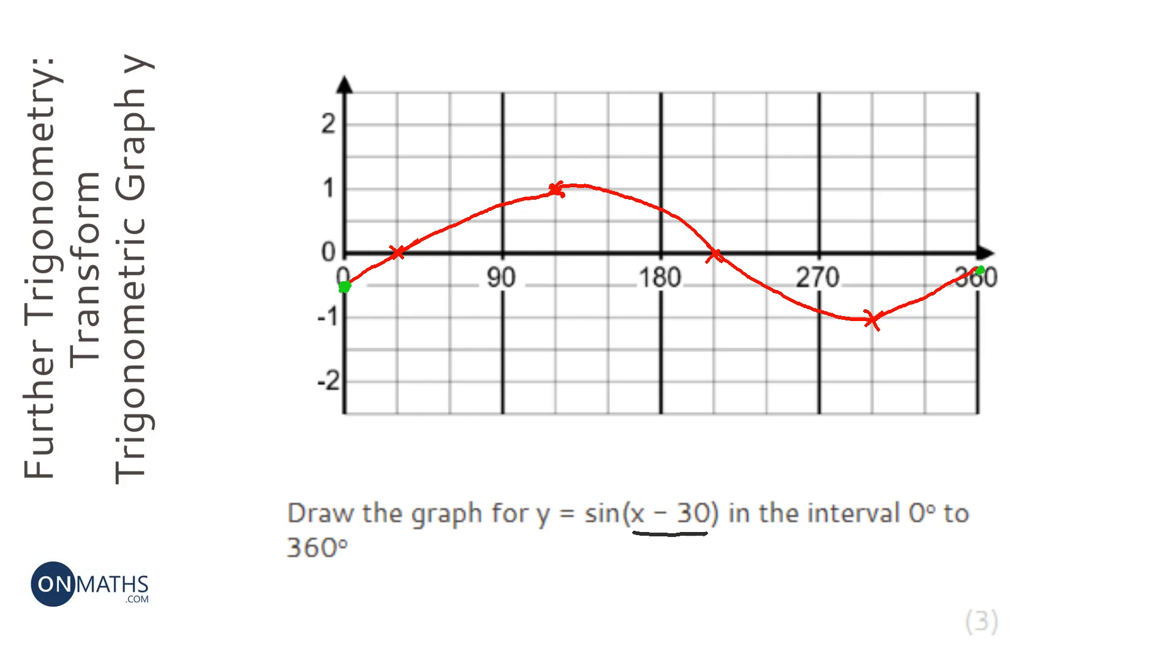So the rule is that if you minus something within a function, then it moves right by that amount. And it's counterintuitive—you'd think if you take away 30 it will move left 30, but it goes the other way. And hopefully I've explained why it will move right by that amount.